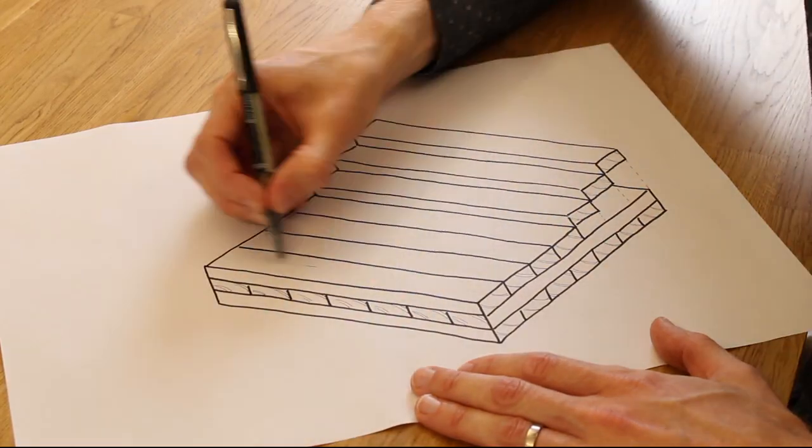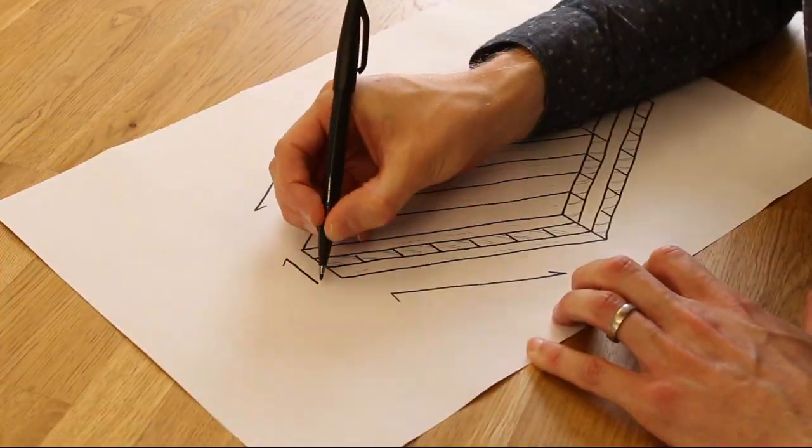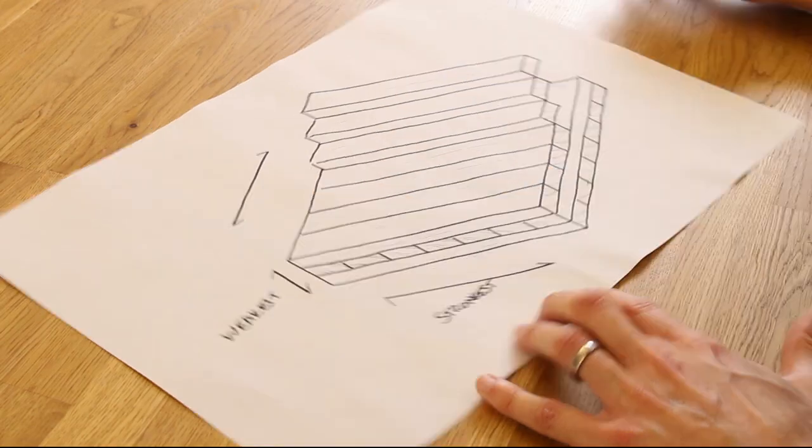For taller buildings where the stress at these junctions is higher this can be addressed in a number of ways: using grouted pockets with a finger joint type arrangement or using screws to act as reinforcement.